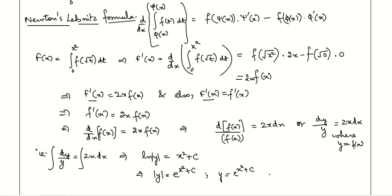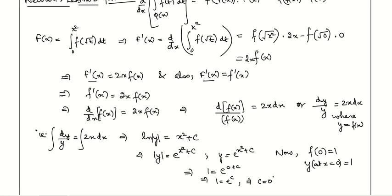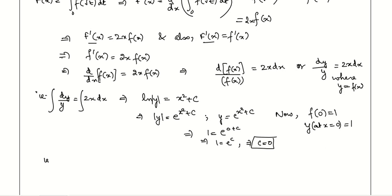Now applying the initial condition: f(0) = 1, which means y = 1 when x = 0. Substituting: 1 = e^(0 + c), which implies 1 = e^c. Since e^0 = 1, we get c = 0. Therefore y = e^(x²), meaning f(x) = e^(x²).